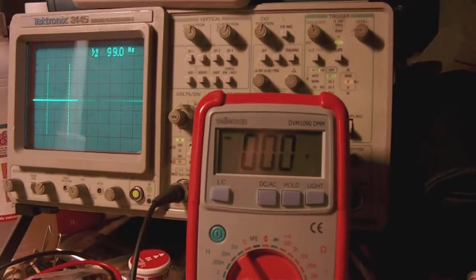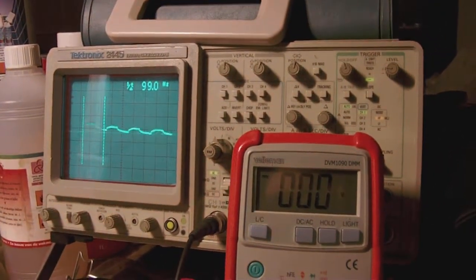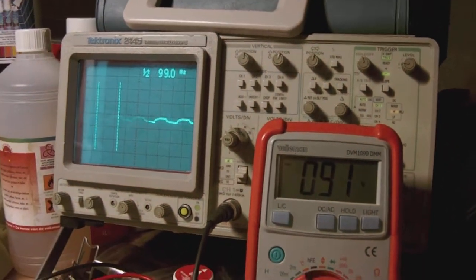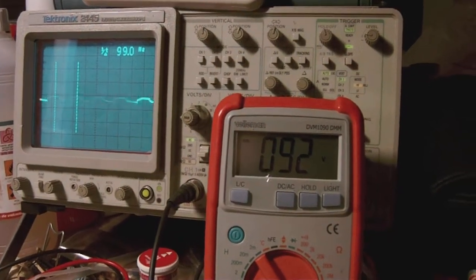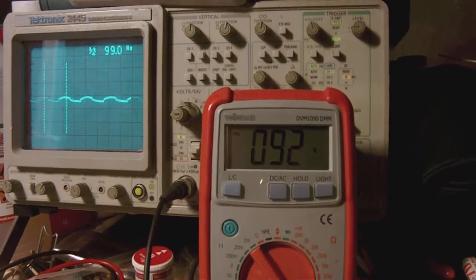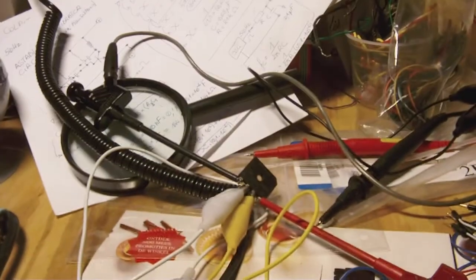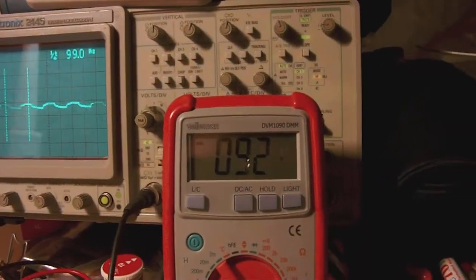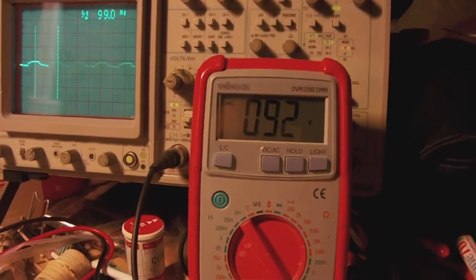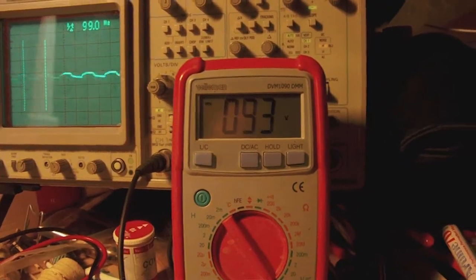There you see the multimeter, now let's switch on the circuit. There you go. The output voltage which comes from the rectifier bridge which you see over there fluctuates a little bit with I would say above one or two volts.